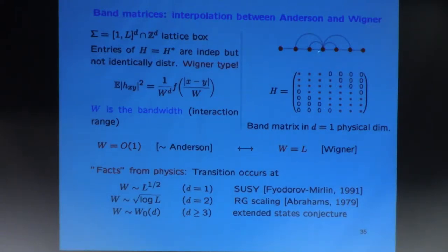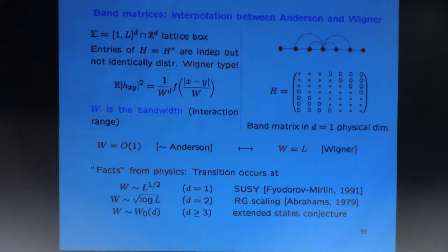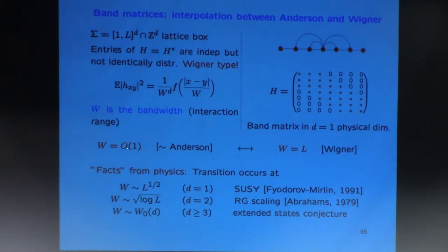This describes the hopping mechanism in a configuration space where you can hop not just to nearest neighbors as for the Laplacian, but at a certain distance W, though you cannot hop beyond that. If the bandwidth is of order one, you are essentially in the Anderson regime, and if the bandwidth is the size of the system — L being the linear size — then you are in the mean-field Wigner regime.